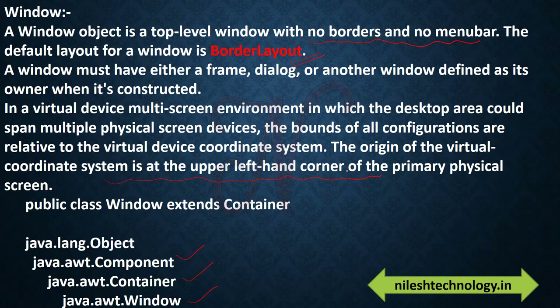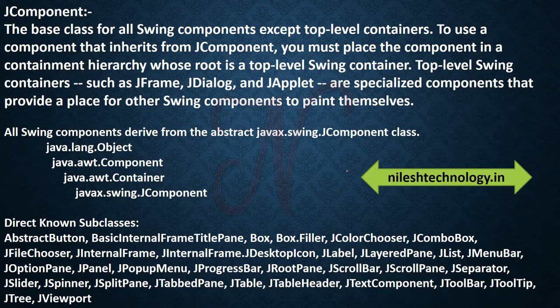Next is JComponent — JComponent is the parent of Swing. In the hierarchy: Object → Component → Container → JComponent. JComponent has a very big list of subclasses such as JFileChooser, JButton, JLabel, JList, and many more, which we will study one by one.